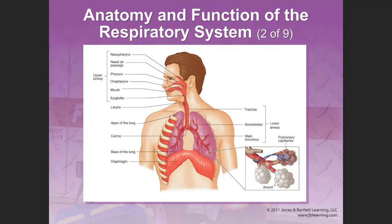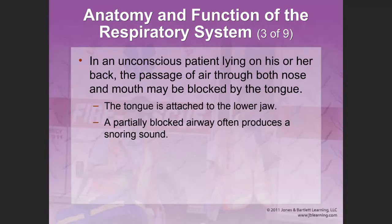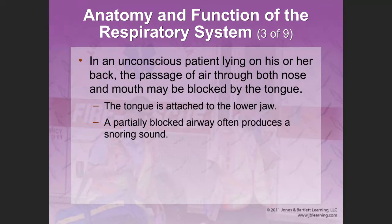The respiratory system is divided into the upper airway structures and the lower airway structures. In an unconscious patient lying on his or her back, the passage of air through both nose and mouth may be blocked by the tongue. When a patient is unresponsive, the muscles that control the tongue relax and the tongue falls back into the air passage, either completely or partially blocking the airway.